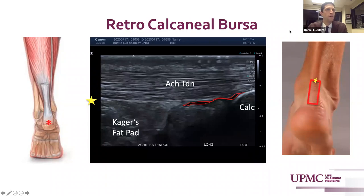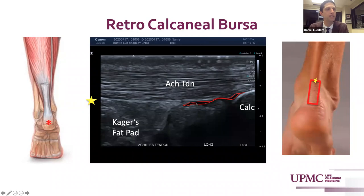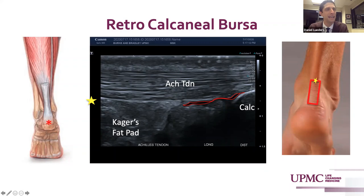The retrocalcaneal bursa lies between the posterior calcaneus and Kager's fat pad and the Achilles tendon. Here we see it just minimally distended with fluid, but this can become rather largely distended with fluid and have a notable increase in vascularity, so turning on color Doppler here is prudent. The retroachilles bursa is a potential space that lies between the Achilles tendon and the skin, and a gel standoff must be used to ensure you don't compress this potential space. The retroachilles bursitis is more commonly a contact or friction bursitis, whereas the retrocalcaneal bursitis is more commonly associated with Achilles tendon pathologies.